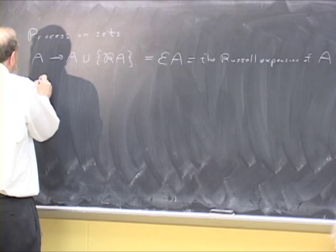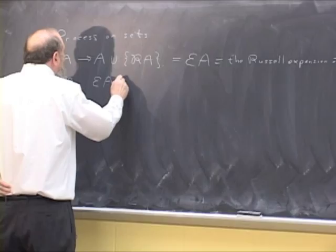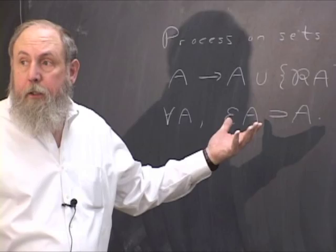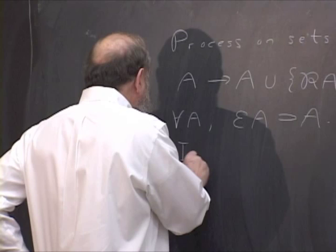Well, the point is that for every A, EA strictly contains A. So you can imagine iterating this expansion process.